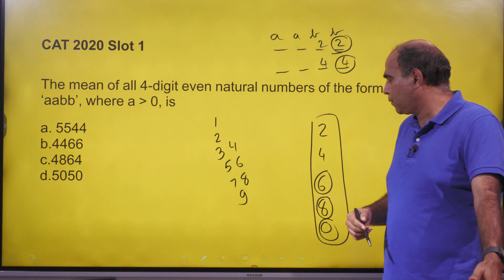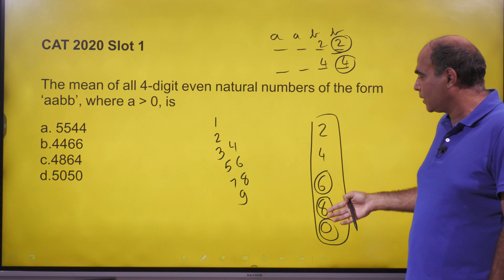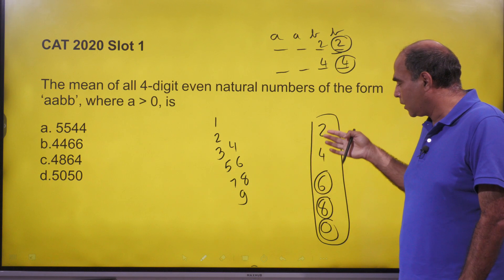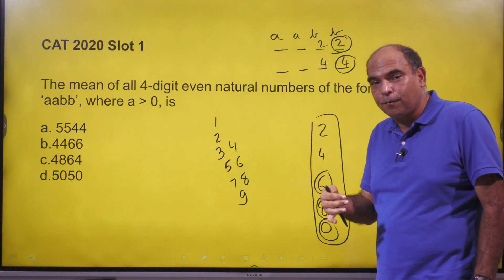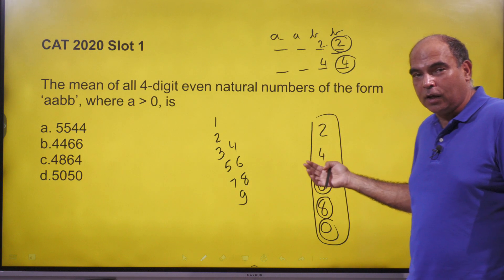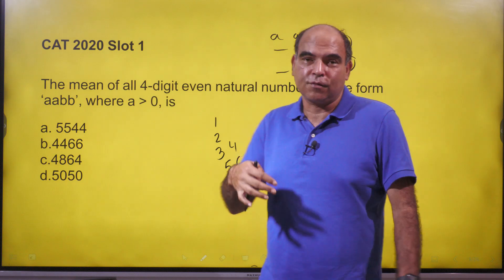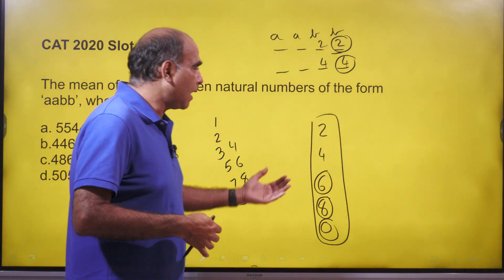If I write them two times each, the sum will be 40 and 10 numbers, the average will still be 4. Which means that the average of the last digit is 4.